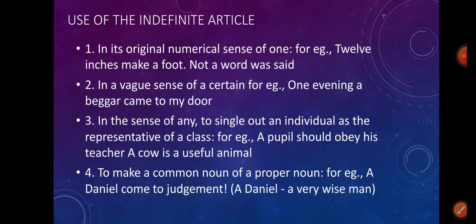Use of the indefinite article: in its original numerical sense of 'one' — for example: twelve inches make a foot. In a vague sense of 'a certain' — for example: one evening a baker comes to my door. In the sense of 'any,' to single out an individual as representative of a class — for example: a pupil should obey his teachers; a cow is a useful animal. To make a common noun of a proper noun — for example: a Daniel comes to judgment, meaning a very wise man.